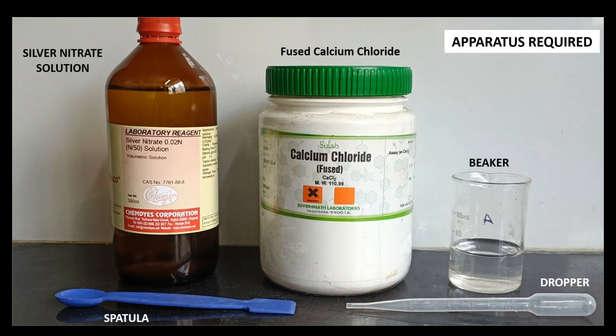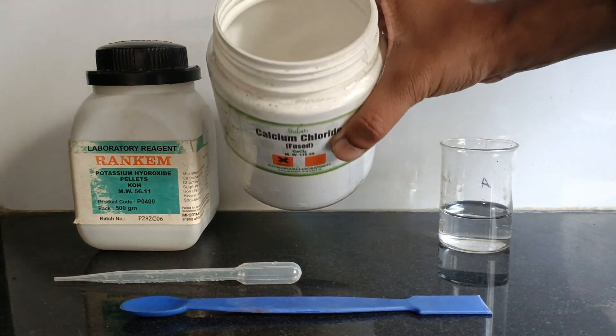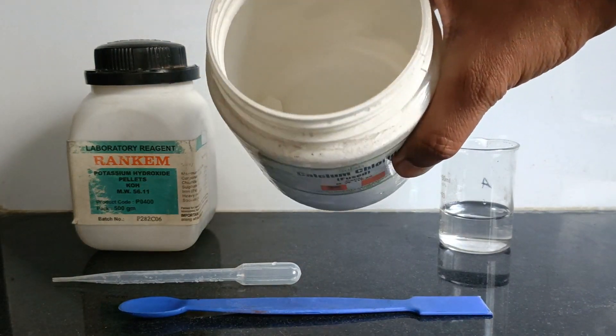Jai Hind Vande Mataram, this is Kunal Mehta from Make Me Scientific. In this video I am going to demonstrate a precipitation reaction between calcium chloride and potassium hydroxide. Here we have calcium chloride, a white crystalline solid.